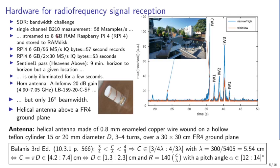A quick computation: the B210 can stream 56 mega-samples per second. Reducing the over-the-wire format to 8-bit per sample and using 6 GB of the 8 GB RAM gives a 57-second record at 56 MHz on a single channel. For two-channel data, the B210 is limited to 30 MHz per second; using 8-bit data gives a 53-second record for both reference and surveillance channels.